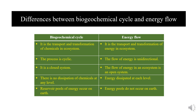The differences between biogeochemical cycles and energy flow: a biogeochemical cycle involves the transport and transformation of chemicals in an ecosystem, while energy flow involves the transport and transformation of energy. In a biogeochemical cycle the process is cyclic, whereas energy flow is unidirectional. Biogeochemical cycles represent a closed system, while energy flow is an open system. In biogeochemical cycles there is no dissipation of chemicals at any level, whereas energy is dissipated at each level. Reservoir pools of chemicals occur on earth, while energy pools do not.